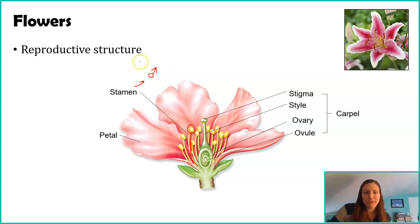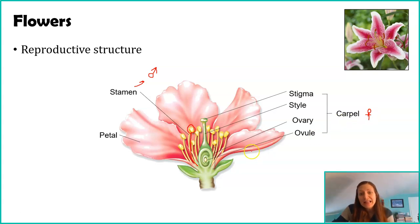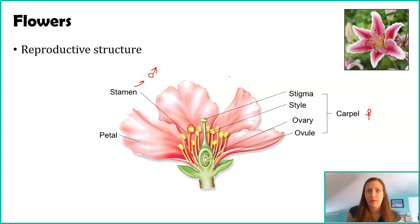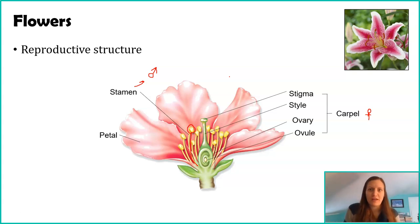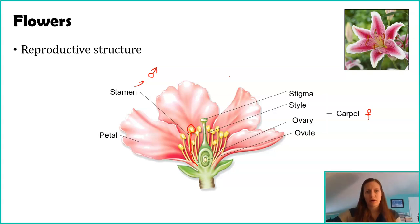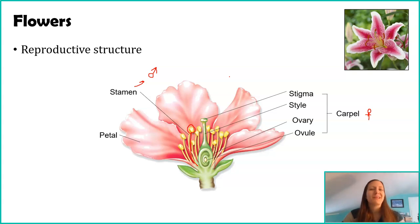The carpal is the female reproductive structure. In this diagram, there's one carpal and maybe 10 or 12 stamens. This is very species dependent — you will have some flowers that have 20 carpals but maybe a hundred stamens. It's not always one to twelve. However, pretty much it's always a lot more stamens than carpals. Within the carpal, we're going to break down the different parts because when we get to the life cycle, the different parts of the carpal are going to matter.